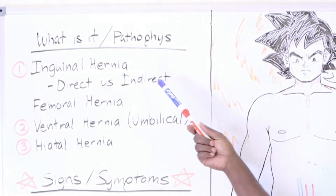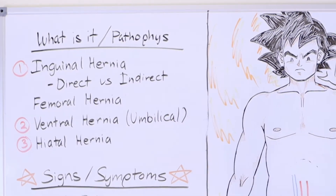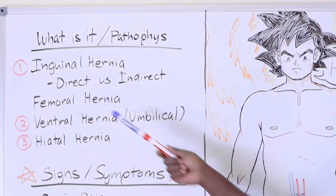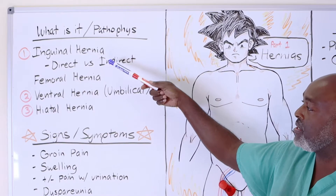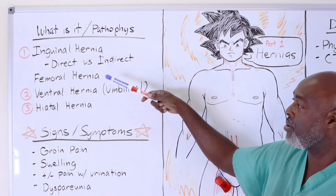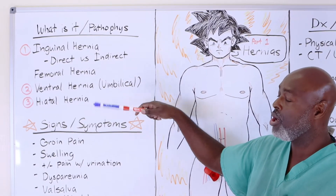Inguinal hernias come in two fashions: direct and indirect hernias. Femoral hernias are different than inguinal hernias because inguinal hernias come out of the inguinal canal, versus femoral hernias, which come out of a femoral defect in the pelvis. We'll talk about why we're grouping them together once we cover ventral hernias and hiatal hernias.